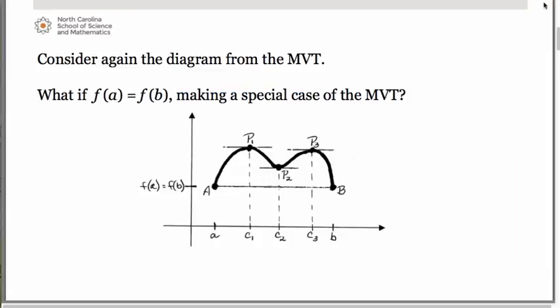Consider again the diagram we had in our lesson on the mean value theorem. This is a special case of the mean value theorem, in which f(a) is equal to f(b). If you take a look at the diagram here, it's the same one we had in our lesson on the mean value theorem, just tilted to the right so that f(a) is equal to f(b).